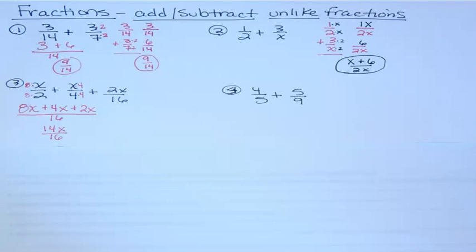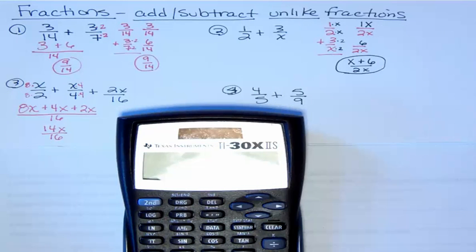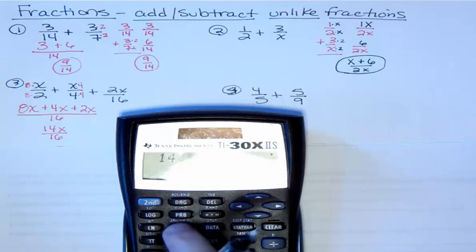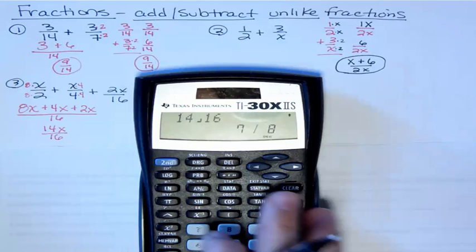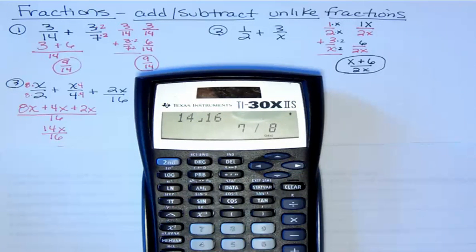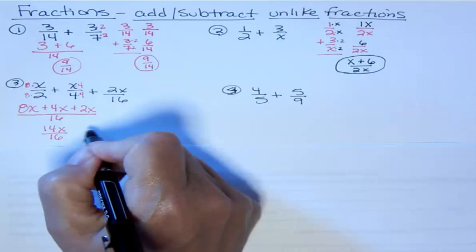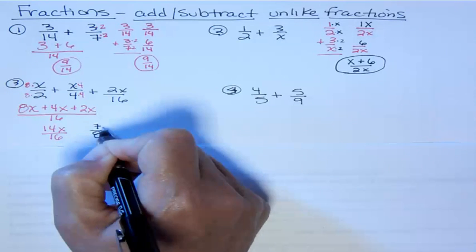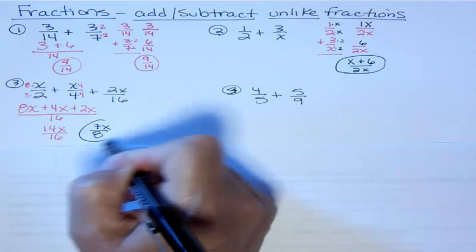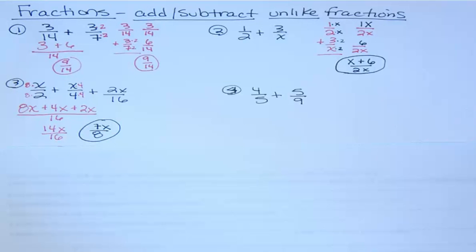That's 14 x's, and I still have my LCD of 16. But I can't leave it as 14x/16 because 14 and 16 can be reduced. I can check on my calculator — go 14, fraction button, 16 — and I get 7/8. So that actually turns out to be 7/8, but there's an x on the top that I can't leave off, so the answer is 7x/8. Kind of interesting and cool with the x's and variables in there.